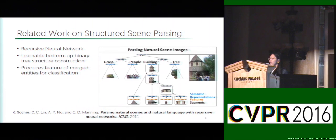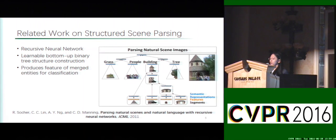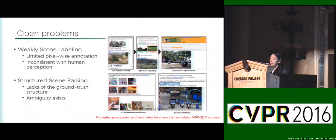The recursive neural network has also been applied for scene structure prediction, as proposed in work from 2011. It can predict the scene configuration by recursively learning tree structures from bottom to top and producing features of merged entities for classification. Although many progresses have been made, there are some interesting open problems.